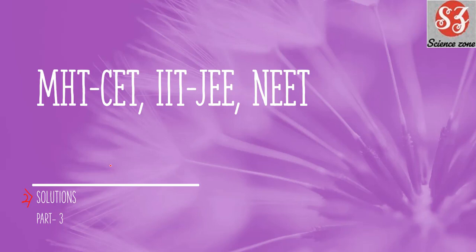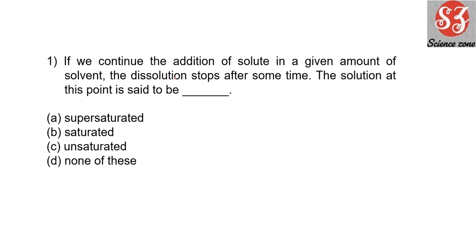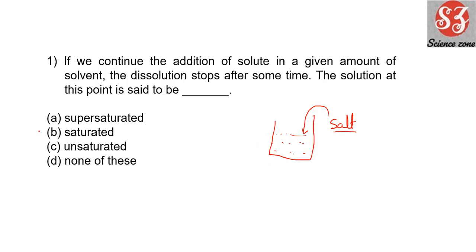Let's start with today's first question. 'If we continue addition of solute in a given amount of solvent, the dissolution stops after some time. This solution at this point is said to be...' Suppose you have taken some amount of solvent in a beaker — say water — and you keep adding salt and stirring. At one point, the answer is option B: saturated solution, because no further amount of solute can dissolve in it. The solution is now saturated.